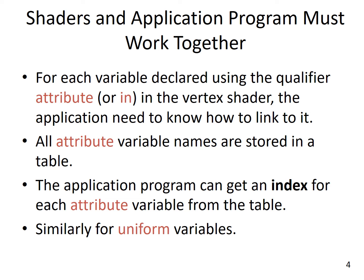The key idea is to use attribute variables for data that are not going to change — for example, the original vertex coordinates — and to use uniform variables for data that changes every frame, for example the rotation angle. As attribute values are not going to change, we set them up in the init function. For uniform variables, we pass their new values for every frame inside the display callback function.